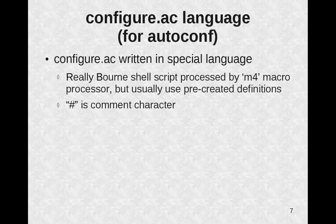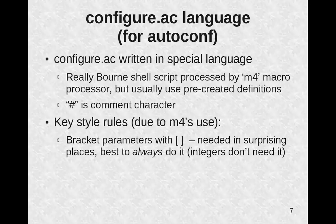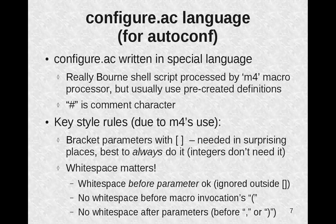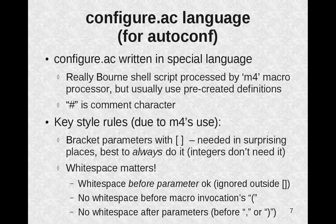The configure.ac file is written in a special language. It's really just a Bourne shell script processed by the m4 macro processor, but usually configure.ac is almost entirely just pre-created definitions from AutoConf. The sharp character is still the comment character. Key style rules due to m4's use are: first, you need to bracket your parameters with square brackets — they're needed in a surprising number of places and it's best to always do it, with one exception: integers. Second, white space matters. White space before a parameter is okay and ignored outside square brackets, but do not put white space before the macro invocation's opening paren, and no white space after parameters — before a comma or closing paren — as they'll be considered part of the parameter.